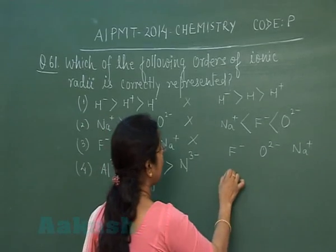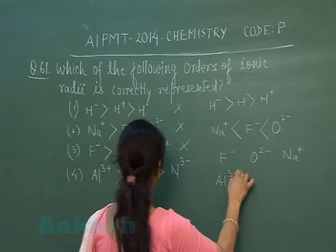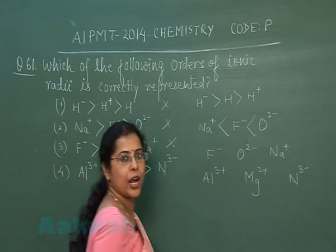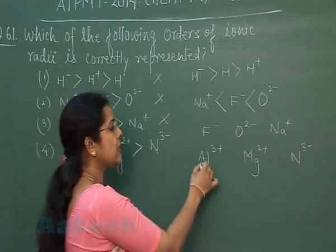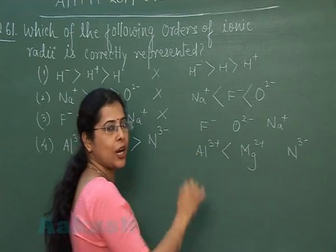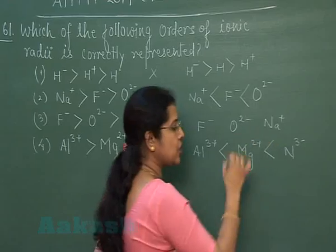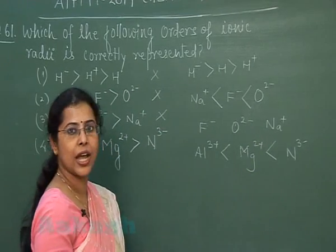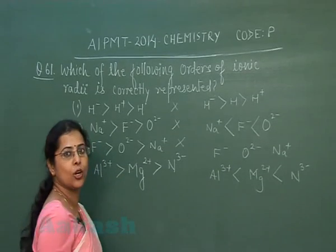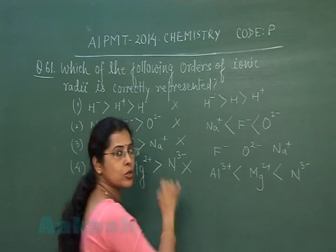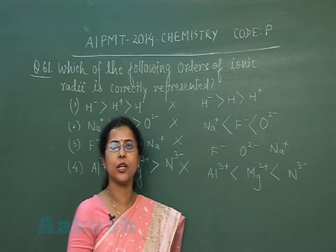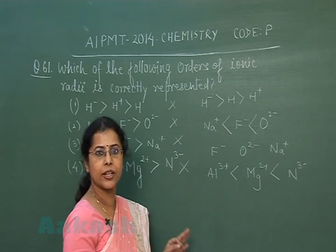The fourth option gives Al³⁺, Mg²⁺, and N³⁻ — also isoelectronic species. Higher the charge, smaller the radii. So the smallest is Al³⁺, then Mg²⁺, and the largest is N³⁻. But the given order places Al³⁺ as the largest, which is also incorrect. This means the given question has no correct option — none of the options is correctly matched.